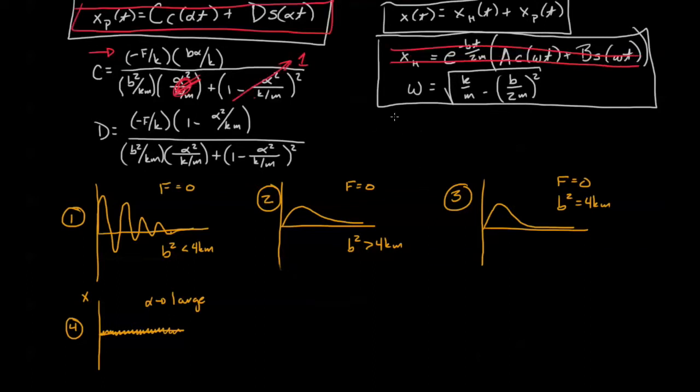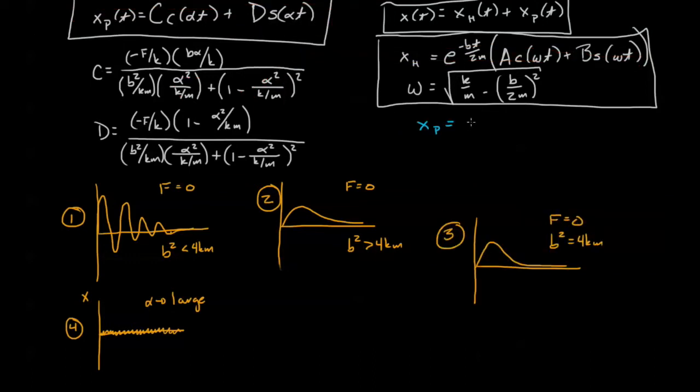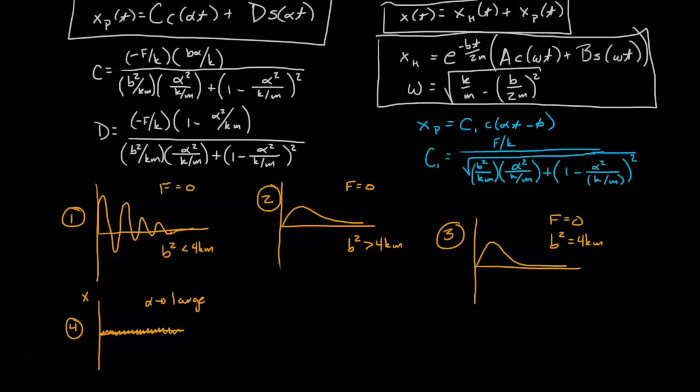Now before we try and figure this out, I'd like to write another form of a particular solution with the sinusoidally varying force. Let's use C1 cosine of alpha t minus phi. So basically we're introducing a sinusoidally varying function with some sort of phase change. And let me write down what C1 equals. So we can see it's still a mess, but we only have to deal with one constant. We're not going to worry about the phase change for now. Now that said, we can look in here and we can see that when alpha, or the driving frequency, gets really big, this term gets big, this term gets big, and as a result the denominator is large and C, which expresses the amplitude of the oscillation, goes down.